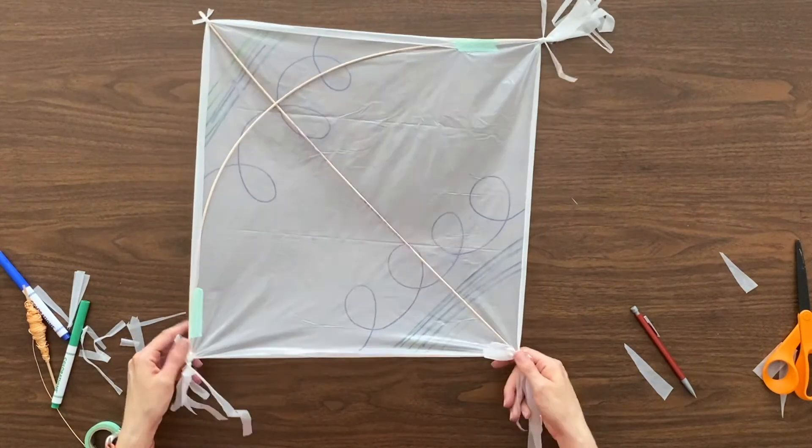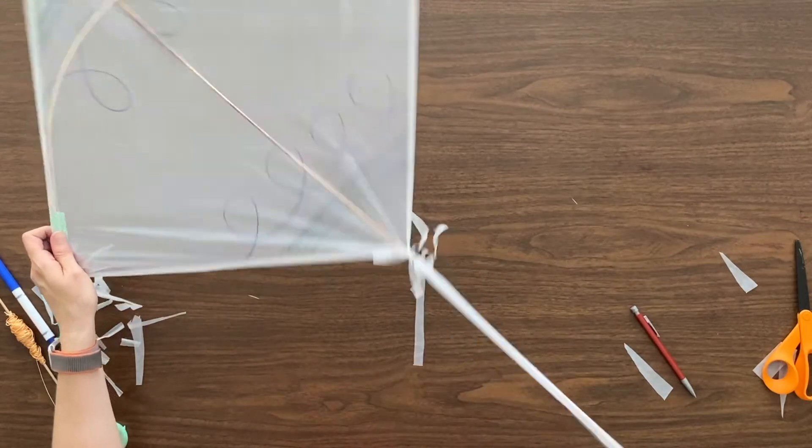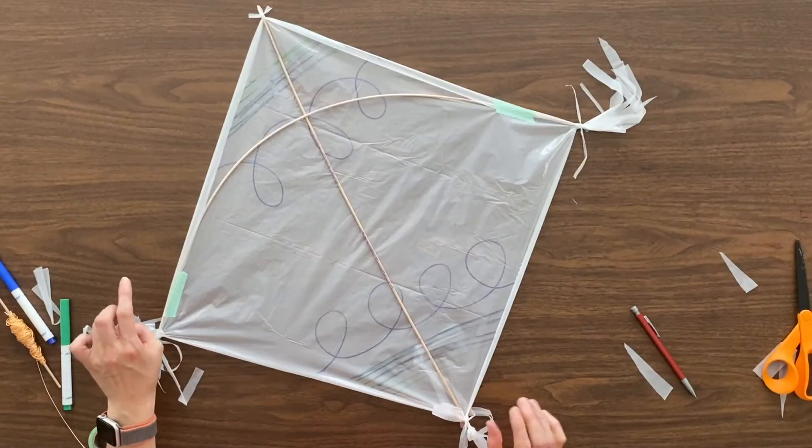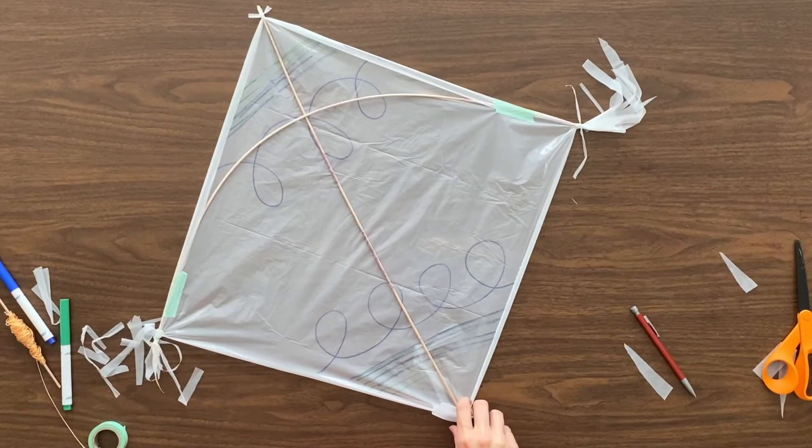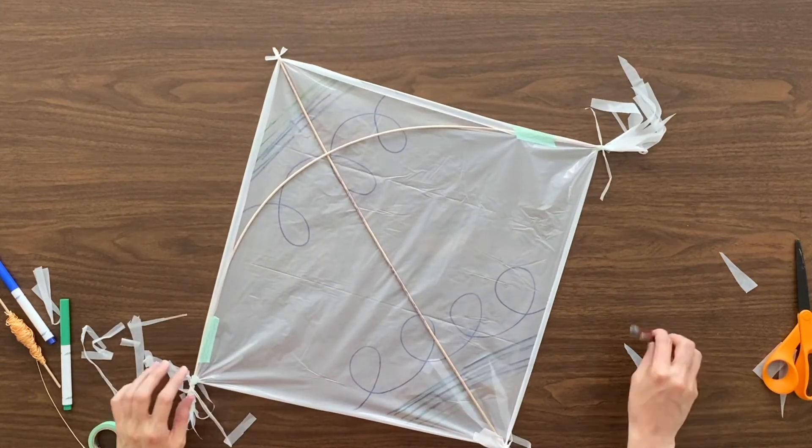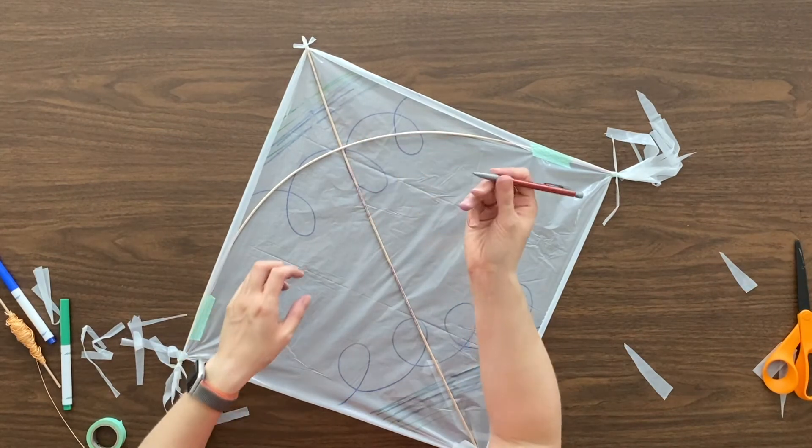Now you have a kite with some ways for it to balance in the air, including a very long tail. Now it needs a bridle. For this part, we are going to poke holes. So where your crossbars meet, you are going to poke.